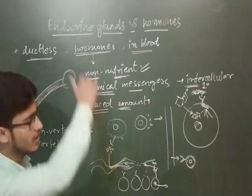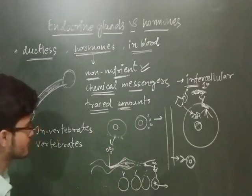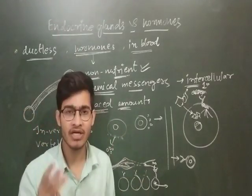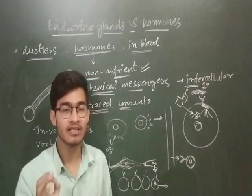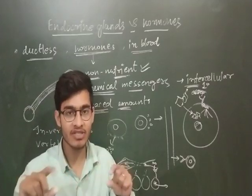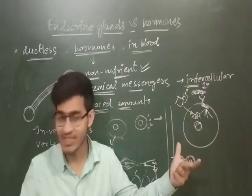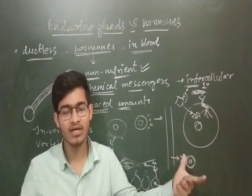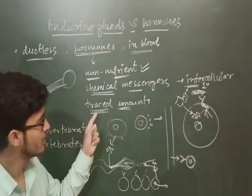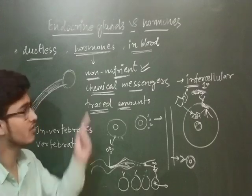To summarize, the three important points are: hormones are intercellular — not intracellular like autocrine signaling; they are present in very trace amounts; and they are non-nutrient chemical moieties.